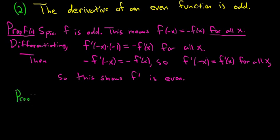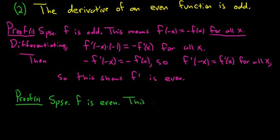Let's try the second one — proof. For the second one, we have to suppose we have an even function, and then show that it has an odd derivative. We'll start by assuming we have an even function, so suppose f is even. Even functions eat negative signs — this means that f of negative x is equal to f of x, for all x in the domain of the function.